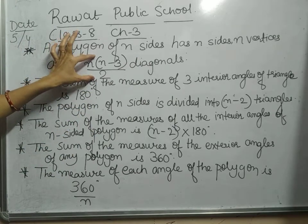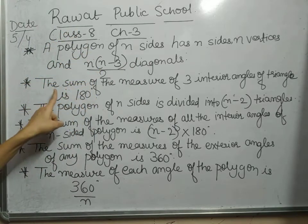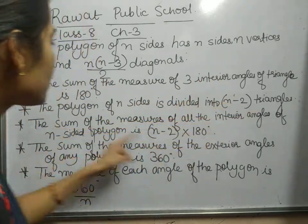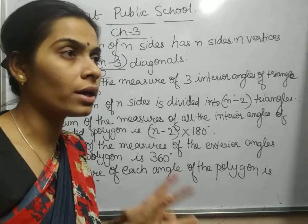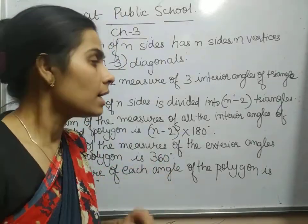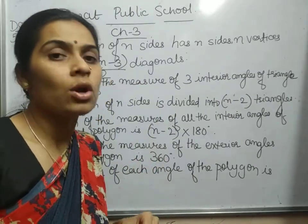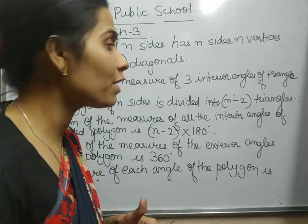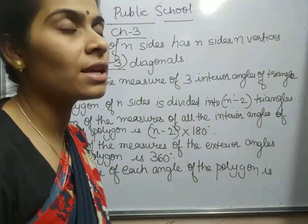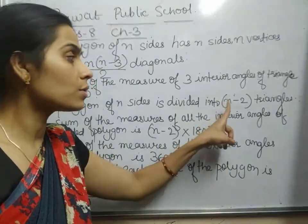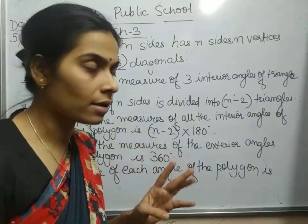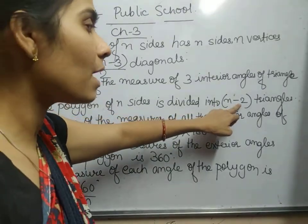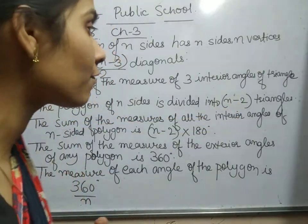The sum of the measures of the interior angles of a triangle is 180 degrees. A polygon of n sides is divided into n−2 triangles. In a quadrilateral we can form 2 triangles, in a pentagon 3 triangles, and in a hexagon 4 triangles — because 6 minus 2 equals 4. So by the formula n−2 we can know how many triangles we can form in a given polygon.